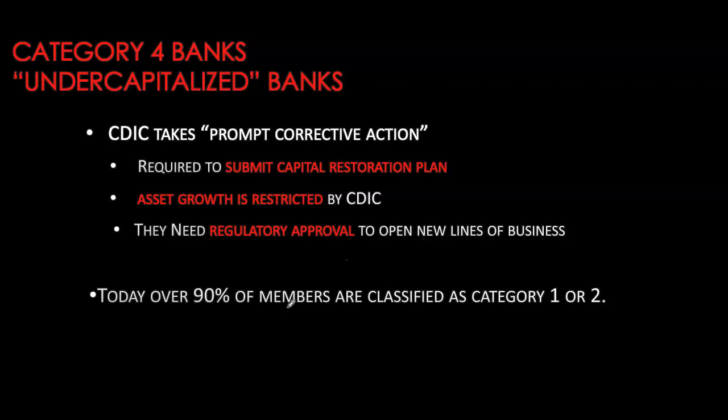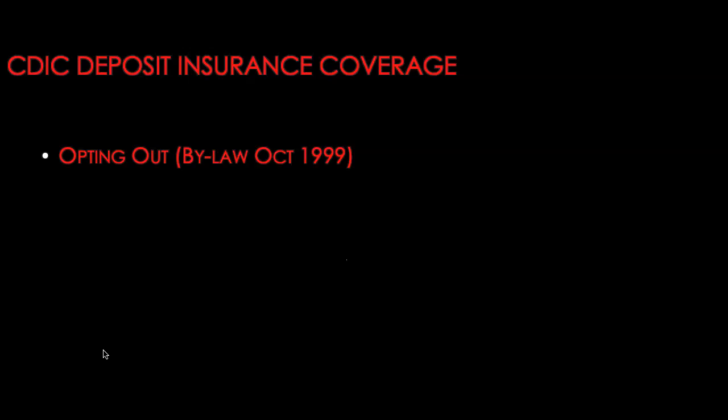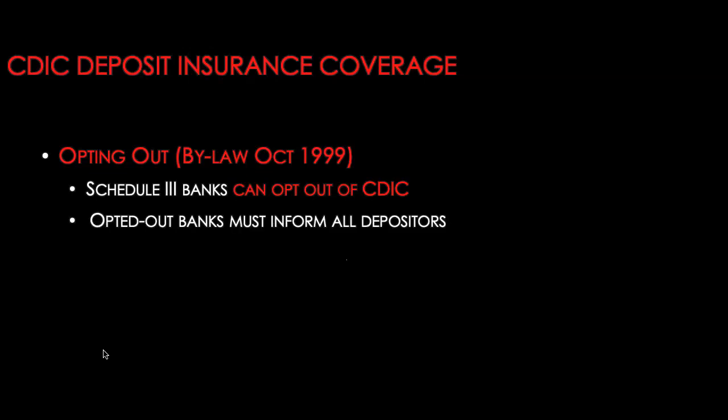The good thing is that over 90 percent of CDIC members are classified as category one or category two. In Canada, we do not have enough information about banks in other jurisdictions like the USA or Europe, because not all countries and regulatory bodies reveal this information. A bylaw in 1999 allowed banks to opt out of deposit insurance, but opting out is only permissible for Schedule 3 banks — banks that primarily accept wholesale deposits, that is, deposits of more than $150,000.